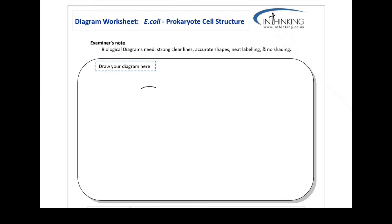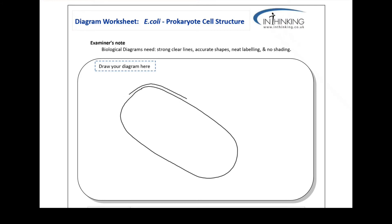This is a video showing you how to draw a prokaryote cell. First we start with the cell wall, and to show it has thickness we'll draw parallel lines showing the thickness. There are many shapes, but this oval shape is probably the easiest in an exam.